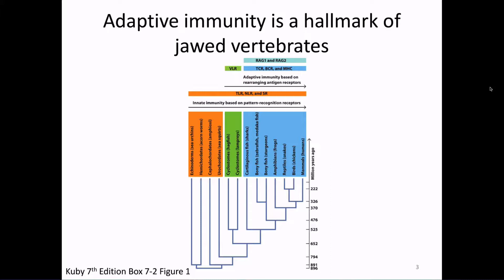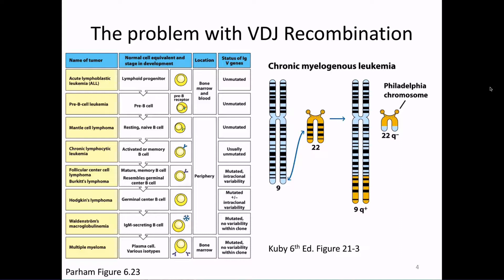Among all those groups of invertebrates, there's no adaptive immunity — there's only innate immunity. But we also discussed last time that there is a problem with VDJ recombination.